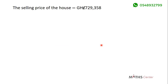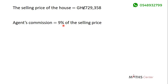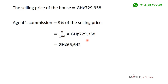The question also asks us to calculate the agent's commission. We know the agent's commission equals 9% of the selling price, which is 9 divided by 100 times 729,358 Ghana cedis. This gives us 65,642 Ghana cedis. So the agent's commission, corrected to the nearest Ghana cedi, is 65,642 Ghana cedis.